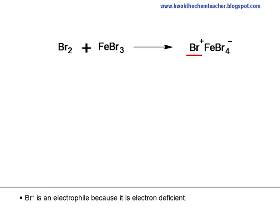Br+ is an electrophile because it is electron deficient. Br+ has six valence electrons and can accept a pair of electrons from a donor.